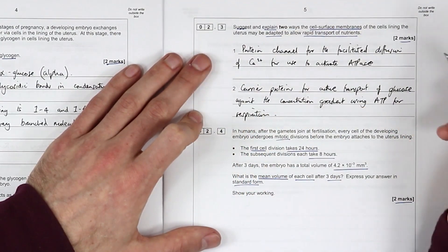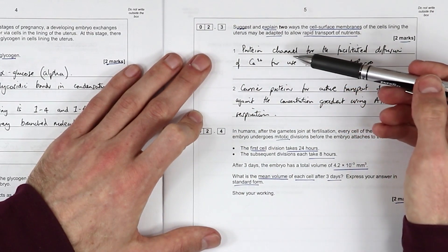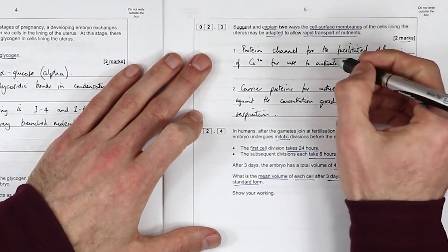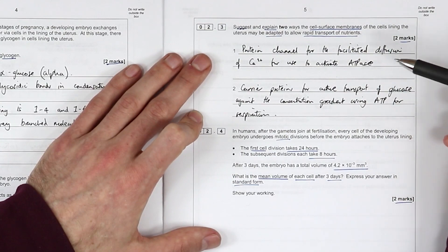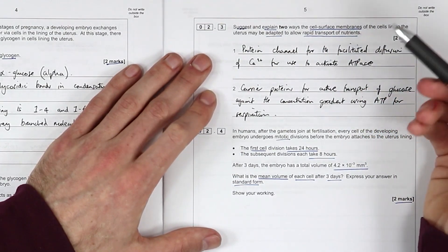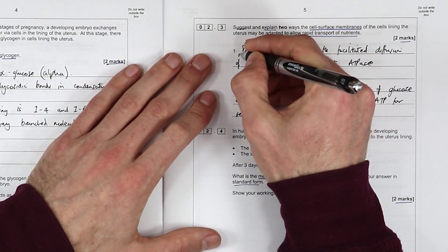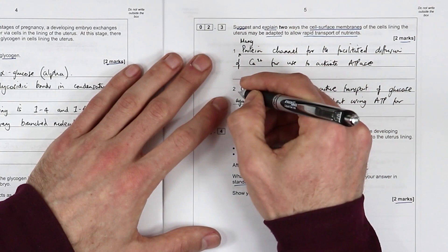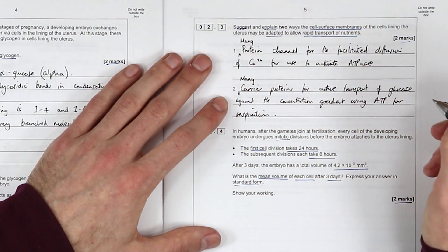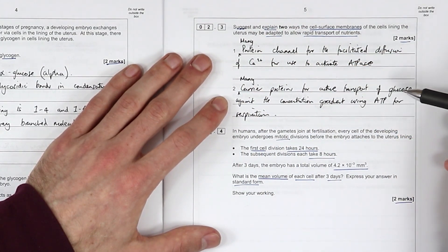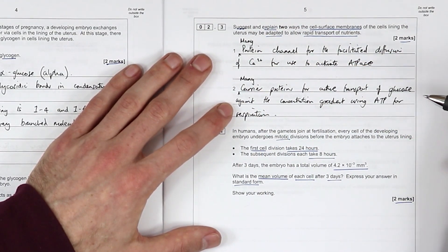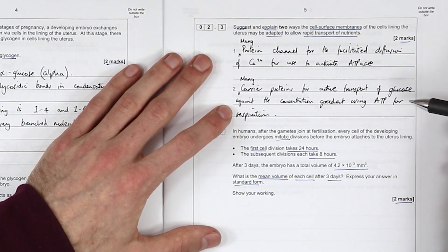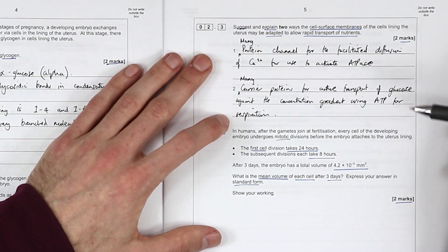So I've said protein channel for the facilitated diffusion of calcium ions for use to activate ATPase. So I've given the channel the adaptation or maybe we should say many because the adaptation is there's lots of them. Carrier proteins for active transport of glucose against the concentration gradient or we could maybe say for the rapid transport of glucose using ATP for respiration.